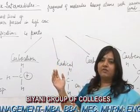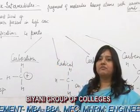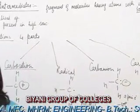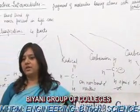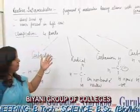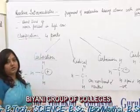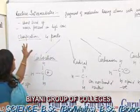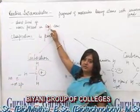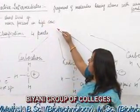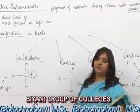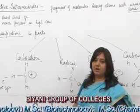Reactive intermediates come under chemistry and are very important in organic chemistry, as they are produced in between the reaction and consumed in between the reaction. We cannot separate them out as they are. These are fragments of molecules having atoms with an unusual number of electrons, and they are very short-lived species. They remain for a very short interval of time and are never present in high concentration.